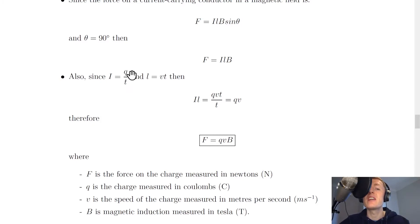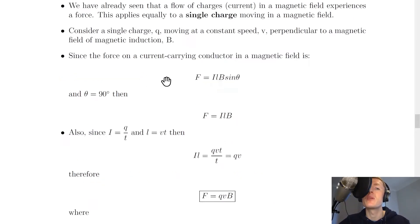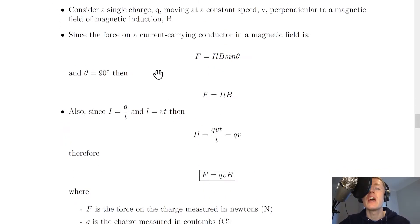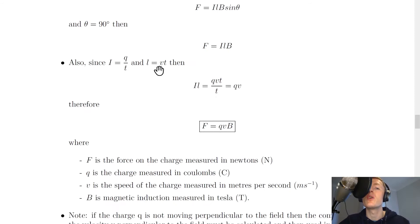Since current is defined as the electric charge transferred each second, or per unit time, and we have the equation q equals it, we can rearrange this for i equals q over t, where we're using lowercase q for the charge, and l equals vt is a form of speed distance time.